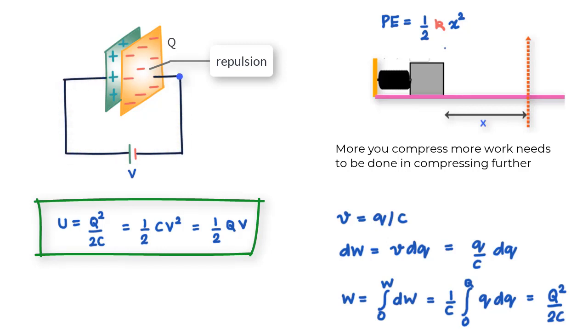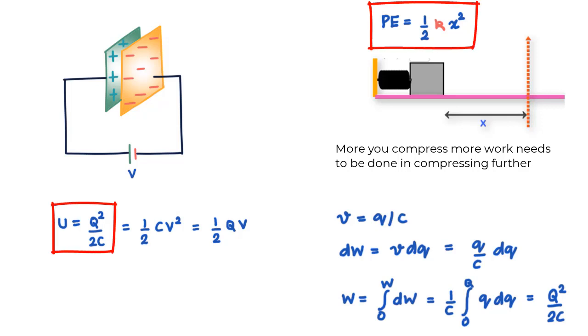Eventually, when you have packed all the charge Q on the plates by doing work in moving the charge, what we have is buildup of electric potential energy in the capacitor. Interestingly, you can see that the two formulas for potential energy are quite the same: 1/C is the equivalent of k here and Q² is the equivalent of x².